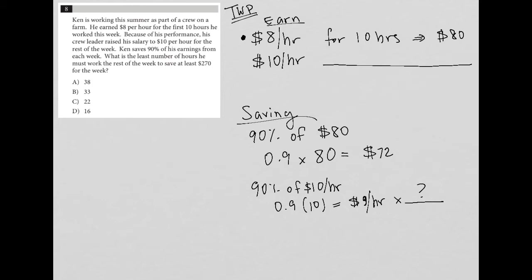The next sentence says, what is the least number of hours he must work the rest of the week? So the question mark, because we know that he worked the 10 hours here, but we don't know how many hours did he work for the rest of the week to save at least $270 for the week?